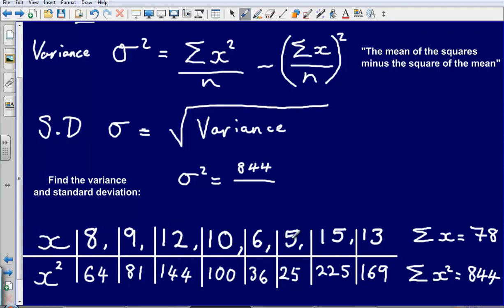1, 2, 3, 4, 5, 6, 7, I've got 8 values. So it's going to be 844 divided by 8 minus 78 divided by 8, and it's the square of that value.